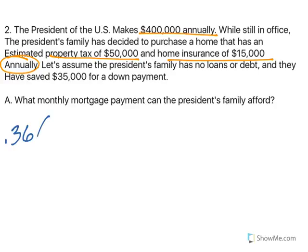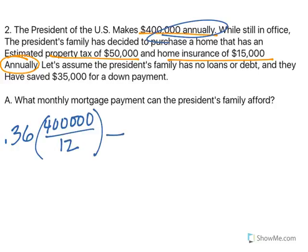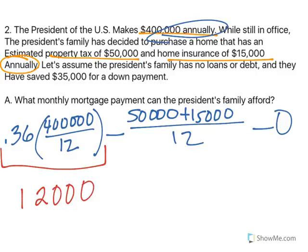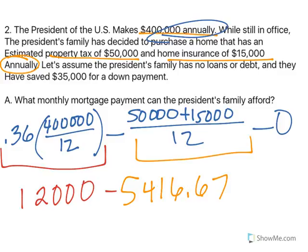We know the annual income, so we take $400,000 and divide by 12. We subtract the monthly housing expenses: $50,000 for property tax plus $15,000 for insurance, divided by 12 since those were given annually. There are no other debts — no student loans, no credit cards. The first part comes to $12,000 per month, and the monthly housing expenses come to $5,416.67. Subtracting those, they can afford a monthly payment of $6,583.33.